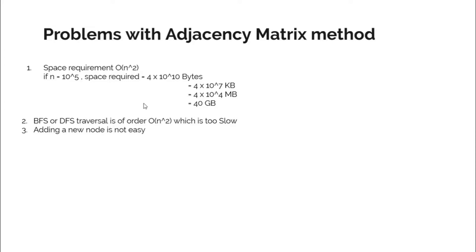So we would not be using matrix representation of graphs very often because it requires too much space. Apart from space, DFS or BFS algorithms take n² time in matrix representation, because to complete BFS or DFS you have to traverse each and every cell at least once. Since there are n² cells, the overall time complexity for DFS or BFS traversal would be n², which is too slow.